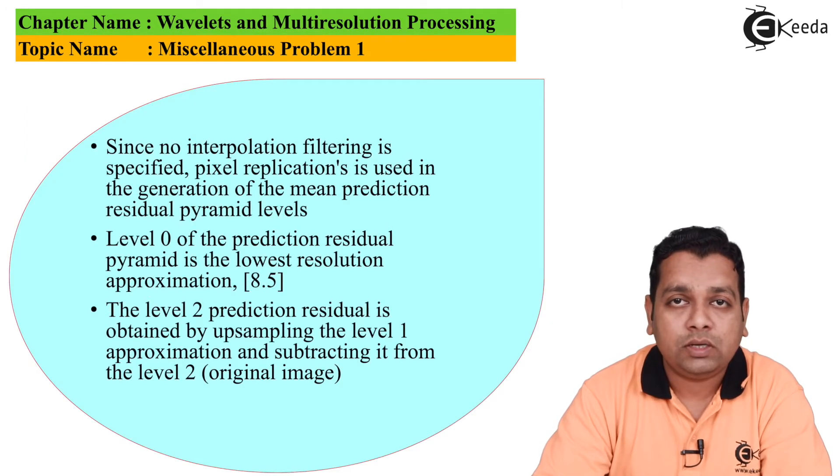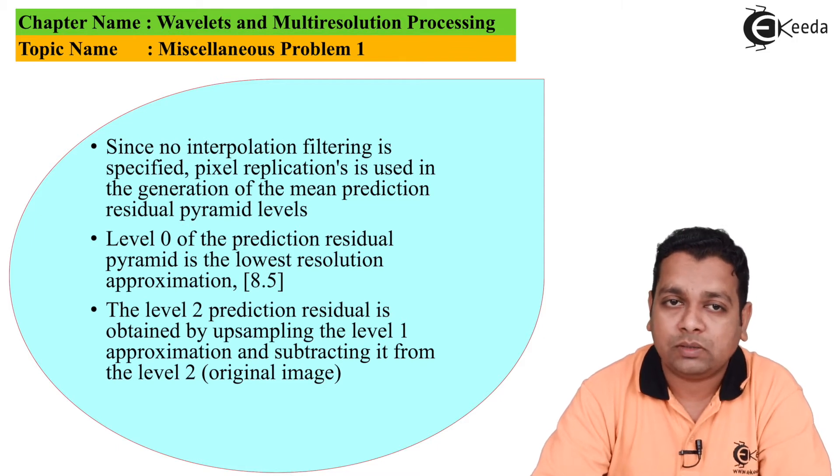Since no interpolation filtering is suggested, the pixel replication is used in the generation of the mean prediction residual pyramid levels. By having pixel replication in mind, the level 0 of the prediction residual pyramid is the lowest resolution approximation with value 8.5. The level 2 prediction residual is obtained by up sampling the level 1 approximation and subtracting it from level 2, the original image.